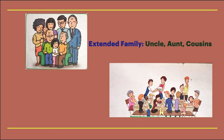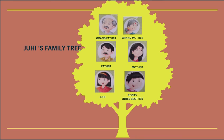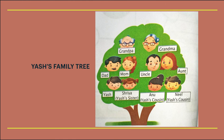When parents, uncles and aunts live together, it is also called joint family. This is a joint family. Now kids, we will see Juhi's family tree. She lives with her grandparents, parents and brother. Now we will see Yash's family tree. He lives with his grandparents, parents, uncle, aunt, siblings and cousins. Sometimes members of our extended family live in other places. We meet them on special occasions such as festivals, birthdays, holidays, etc.